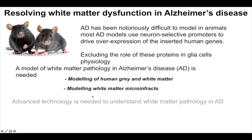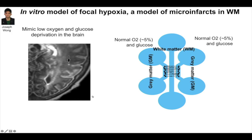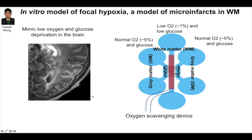Now, can we model white matter microinfarcts? We can take away oxygen in one compartment only to create a focal lesion. Since the whole culture is in an incubator, we made an electrode that can scan and deplete oxygen only in the axonal compartment, leaving the neuronal cell bodies intact.